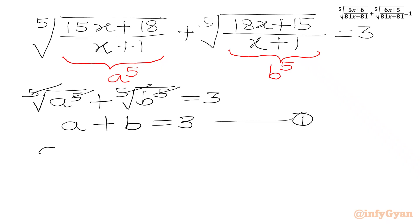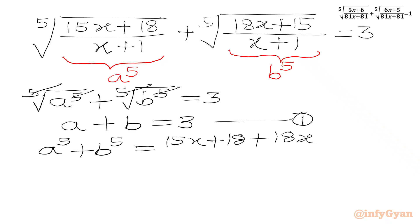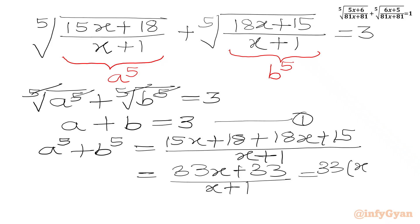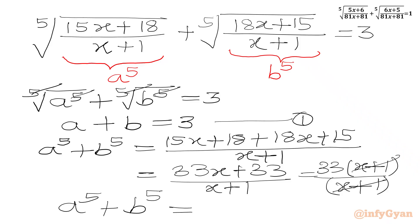Now we will add a^5 with b^5. So we write (15x+18) and (18x+15) in the numerator with common denominator (x+1). We get (15+18)x is 33x, and 18+15 is 33, over (x+1). Taking 33 common from the numerator gives (x+1)/(x+1) which is 1. So our second equation is ready: a^5 plus b^5 equal to 33.